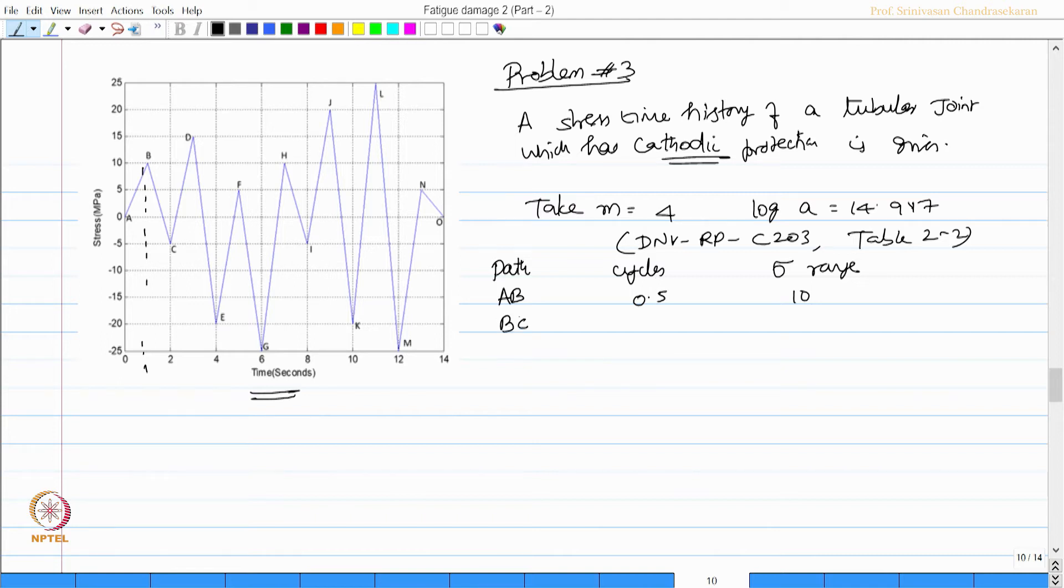Similarly, B-C 0.5, stress value is 15. You can see B-C from 10 to minus 5. C-D 0.5, 20. D-G starts from D, drops at E, then goes to G. D-G 0.5 because D and G are only 0.5. But the stress value is from minus 25 to 15, that is 40.